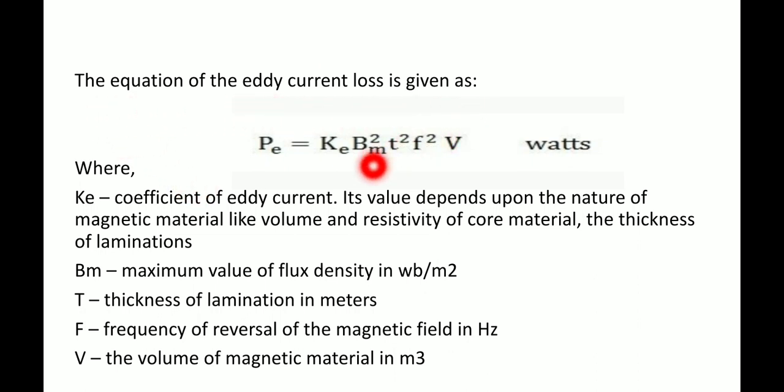The equation for eddy current loss is: Pe = Ke × Bm² × t² × f² × V, where Ke is a coefficient of eddy current whose value depends upon the nature of magnetic material — volume and resistivity of core material and the thickness of lamination. Bm is the maximum value of flux density in Weber per meter square; t is the thickness of lamination in meters; f is the frequency of reversal of the magnetic field in hertz; and V is the volume of magnetic material in meter cube.